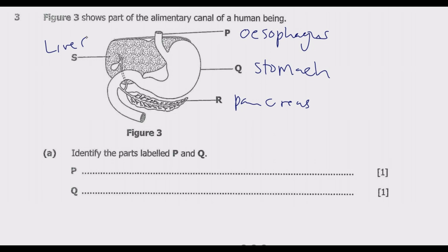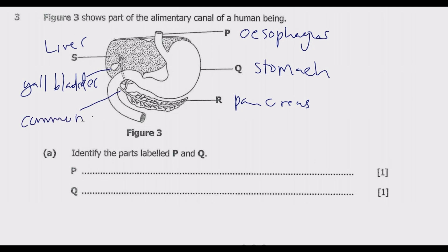Another key part to know is the gallbladder. The main function of the gallbladder is to store bile until it is needed for digestion — bile is very important in the digestion process. There is also the common bile duct. Once you know all these parts, you are good to go.